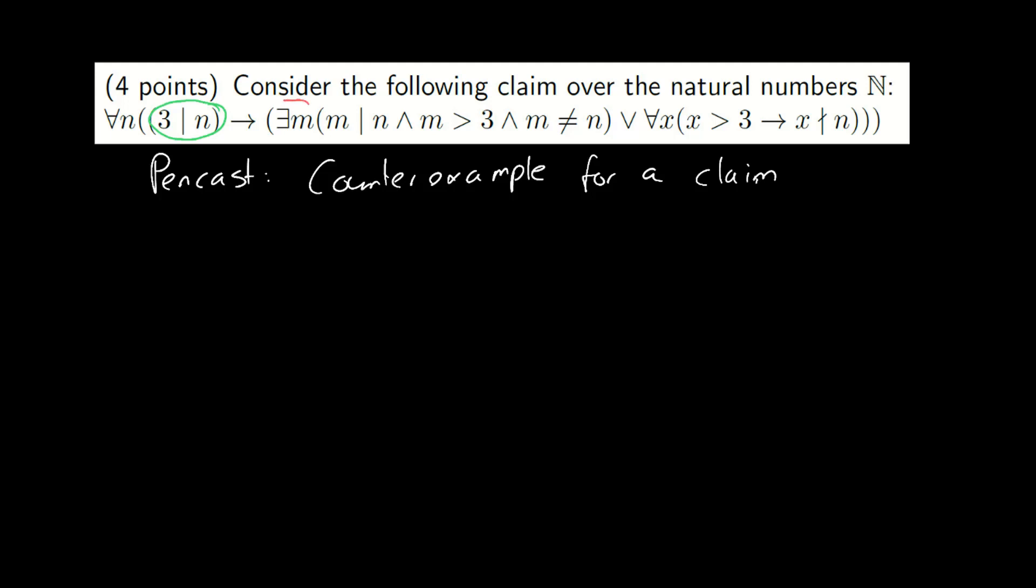More specifically, this is a claim about numbers. It says that all numbers divisible by 3 must also have a number that divides it that is larger than 3 and unequal to n, or all numbers larger than 3 must not divide it.